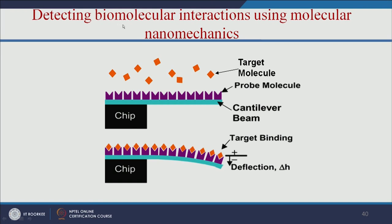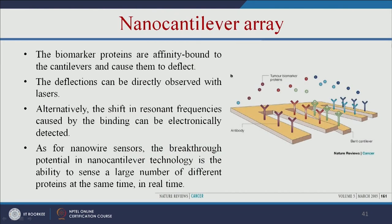Let us see how carbon nanotube-based sensors can detect various diseases using a cantilever beam chip. If patient serum has a large amount of a particular antigen that binds to the beam, there will be deflection proportional to the number of antigens. We can measure the deflection to identify the disease. Based on this principle, we can make a nano-cantilever array for biosensing applications.